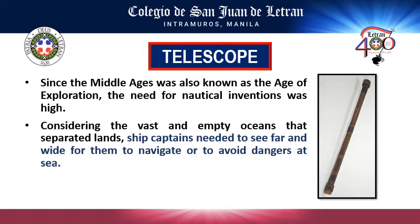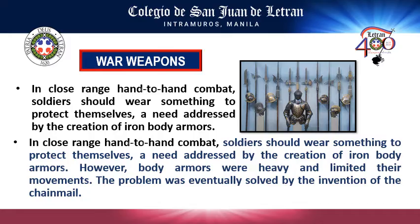Third is the telescope. Using this invention was one of the key factors in addressing problems in navigation. It has been used by ship captains who needed to see far and wide areas to avoid dangers at sea. Lastly, war weapons addressed concerns of safety and protection. Soldiers needed to protect themselves, so iron body armors were created. However, these were so heavy they limited movement, a problem eventually solved by chain mail armor, which is lighter compared to iron body armor.